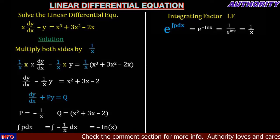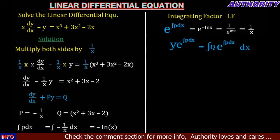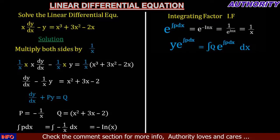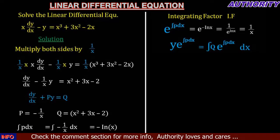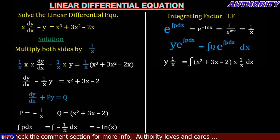Now we have the integrating factor. The solution is given by y multiplied by the integrating factor equals the integral of Q multiplied by the integrating factor dx. So we have y times 1 over x equals the integral of (x squared plus 3x minus 2) times 1 over x dx.